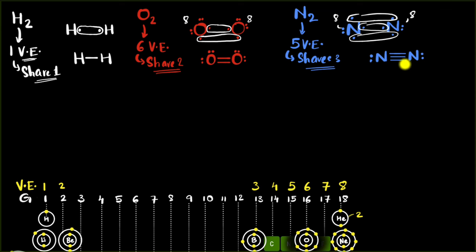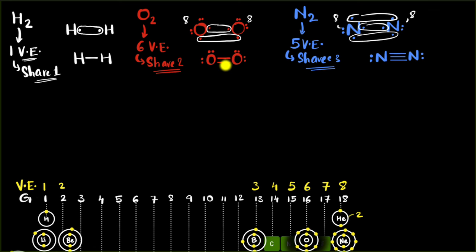This explains why nitrogen loves to form three bonds — either a triple bond, or a double bond with one element and a single bond with another, or three separate single bonds. And oxygen loves to form two bonds — a double bond with another atom, or two single bonds.